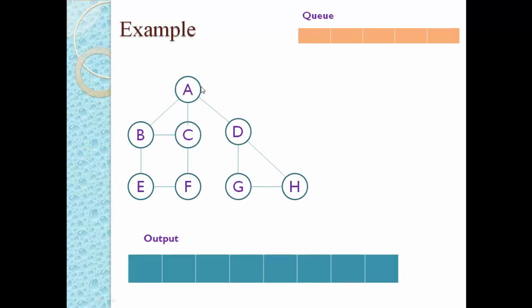Let's take one example. Suppose we have a graph with a number of nodes and edges and we want to visit all nodes using BFS. We start with an empty queue. Step one: we can consider any node as the source node — A, B, G, or H. Suppose we consider A as our starting node.